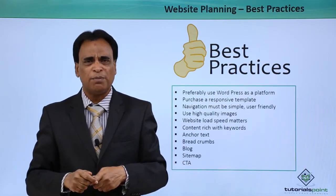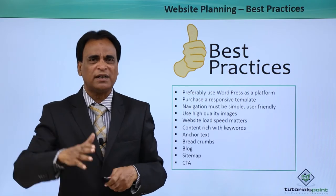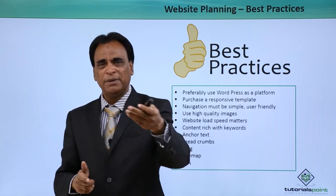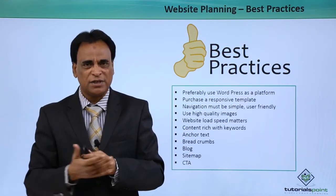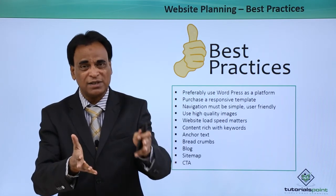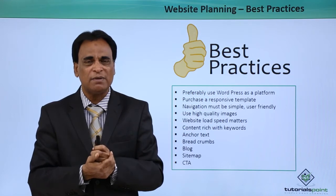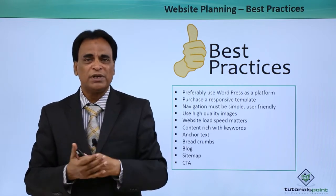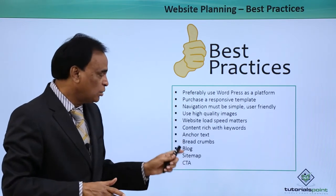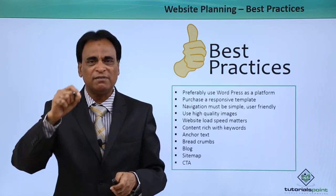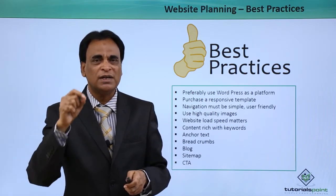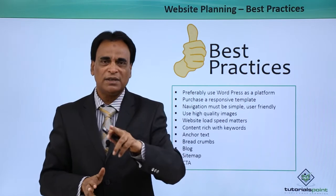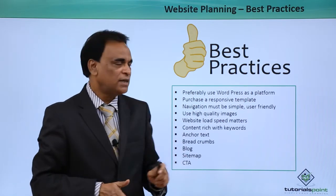A blog on the website plays a very important role — you can integrate a WordPress blog and write high-quality, fresh, original content. Then you have a sitemap: it can be an HTML sitemap, which provides links to all pages on the website, or an XML sitemap, which you can submit to Google through Search Console or place on the server. And each and every page must have a clear, compelling call to action so users can take action and get in touch with you.